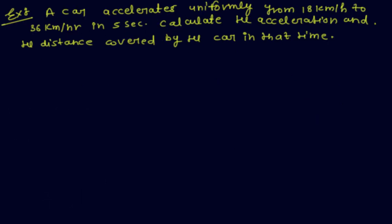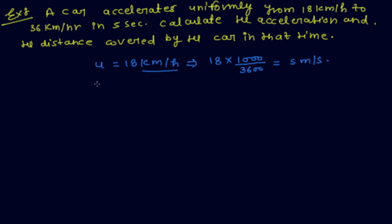A car accelerates uniformly from 18 km per hour, so initial velocity U equals 18 km/h. Converting to SI units: 18 into 1000 by 3600 equals 5 meters per second. Final velocity V equals 36 km per hour, which is 10 meters per second. Time taken is 5 seconds.